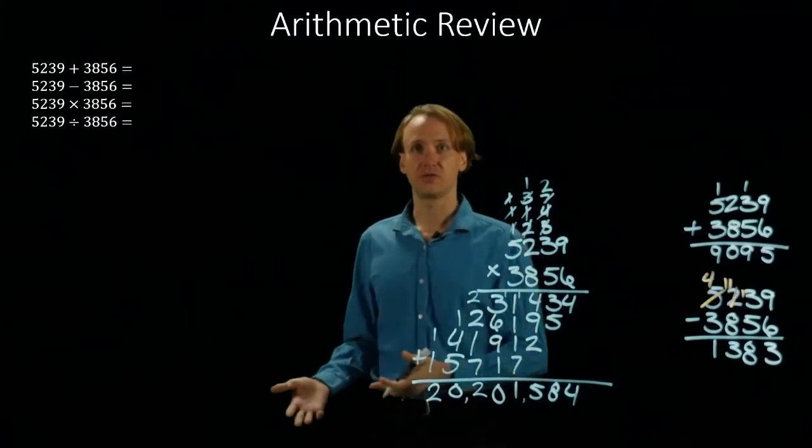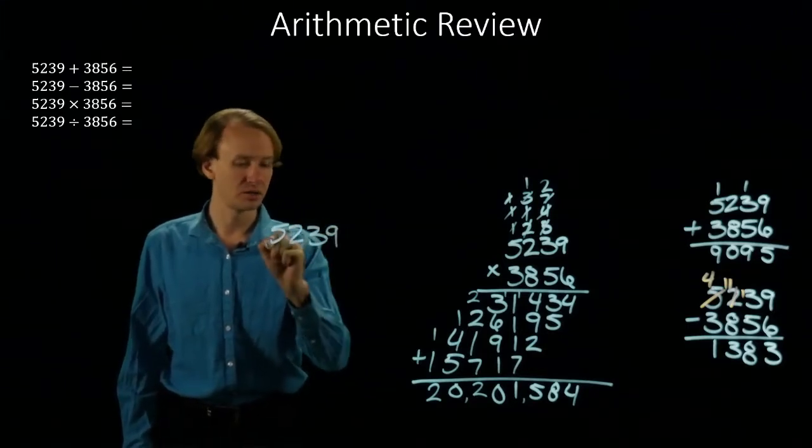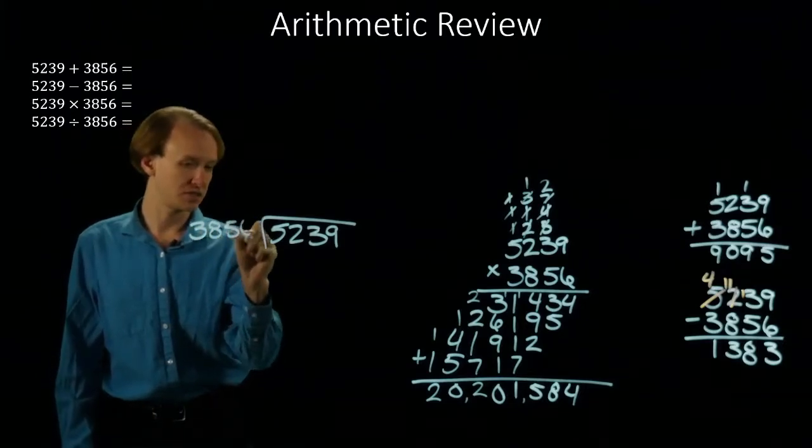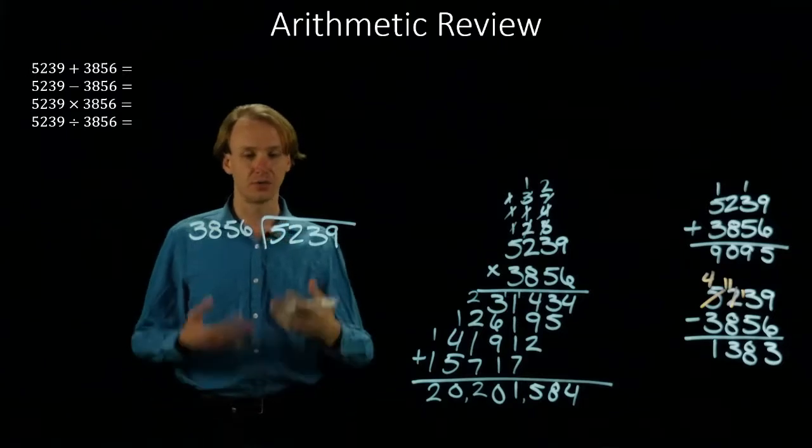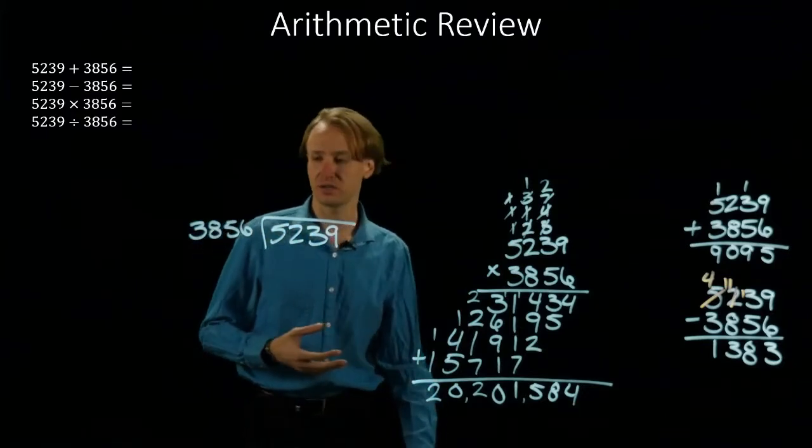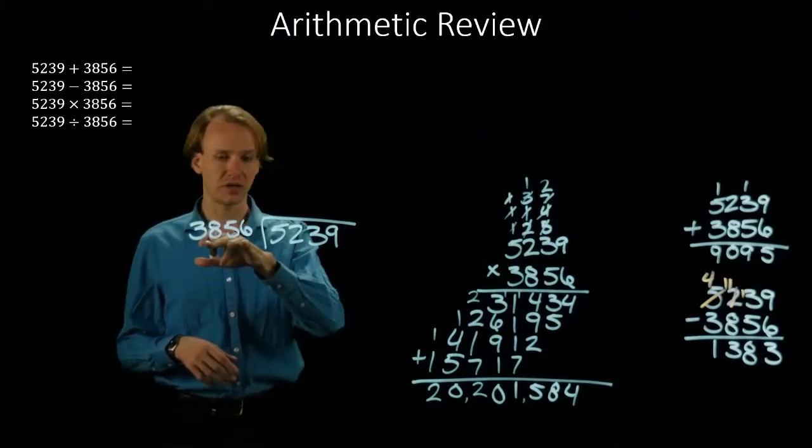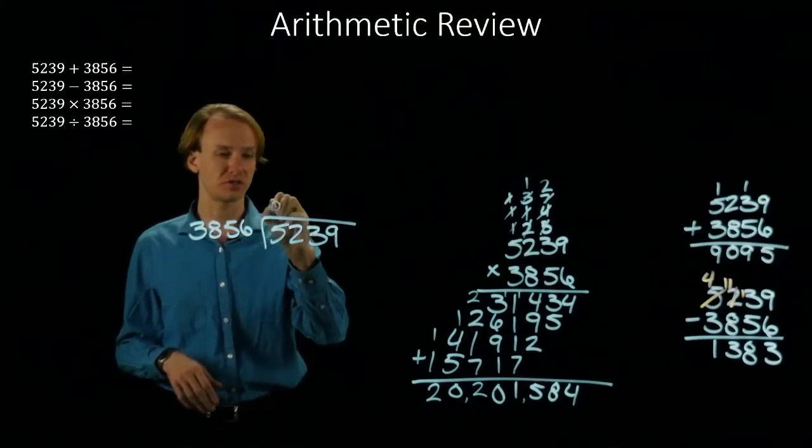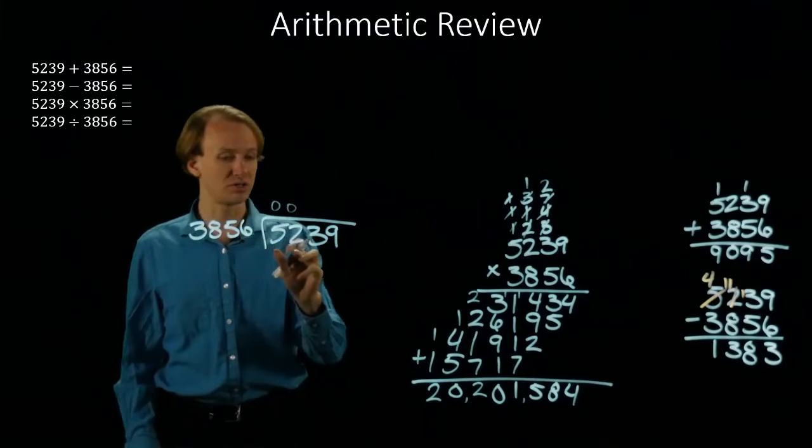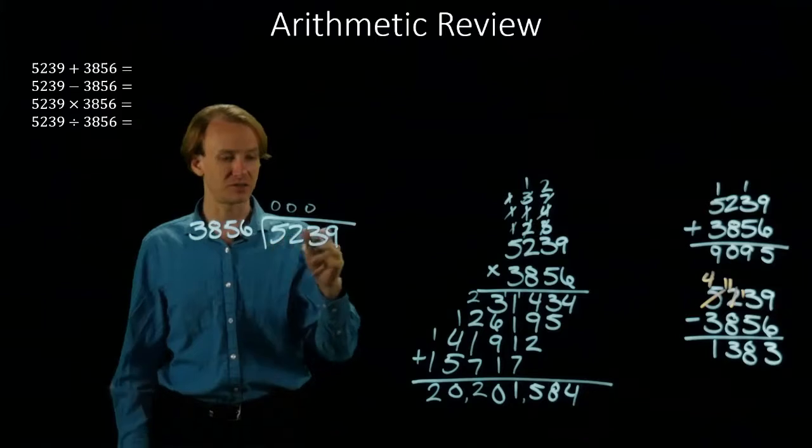So if we go on and do this again for the division, I will start with 5239 and we're going to divide 3856 into this number. So obviously this is not going to divide cleanly. We're going to have a long fraction attached to it. But we should be able to do this as well. So 3856 is not going to go into 5. So I can put a 0 there. It's also not going to divide into 52. Still not going to divide into 523. But it is less than 5239.